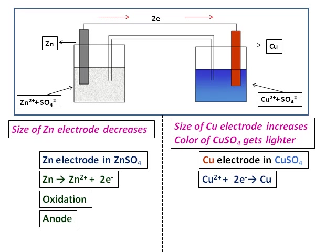And the color of copper sulfate gets lighter because we remove the copper ions from solution. And if you look at the equation that takes place here, copper ions are accepting two electrons. Therefore, this is gain of electrons. Hence, we call this reduction. And always the electrode at which reduction takes place, we call it the cathode.